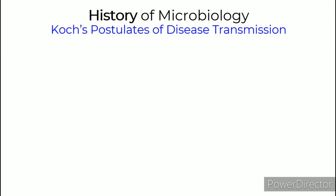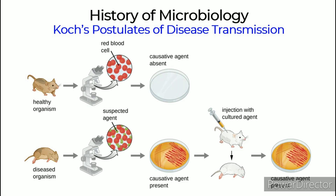Koch's postulates of disease transmission: The causative agent must be present in all affected organisms but absent in healthy individuals. The agent must be capable of being isolated and cultured in pure form. When the cultured agent is introduced to a healthy organism, the same disease must occur. The same causative agent must be isolated again from the affected host.